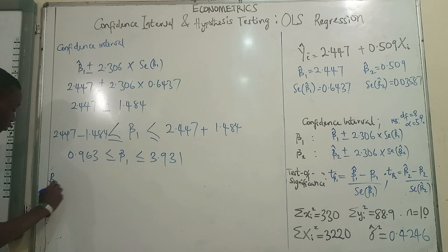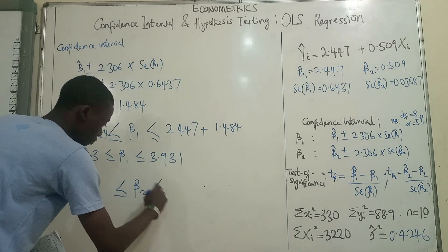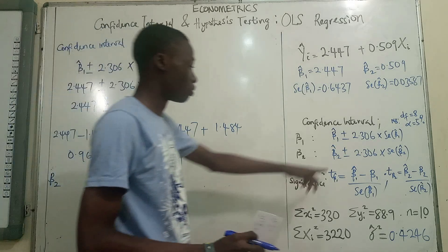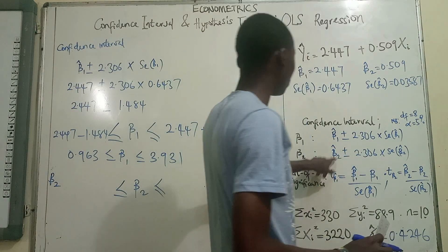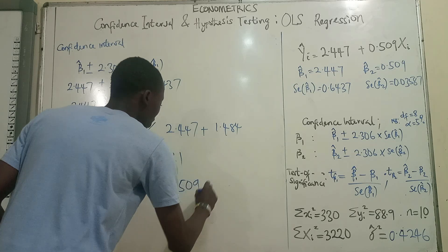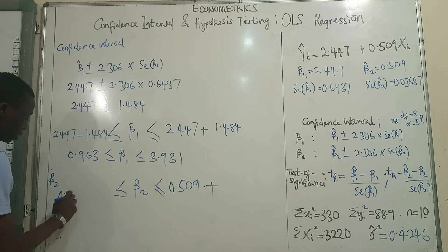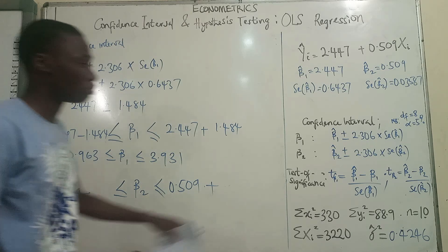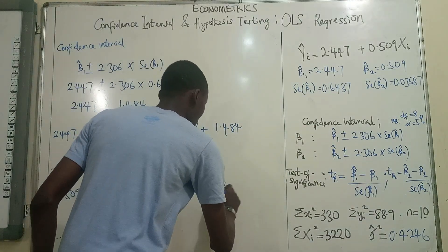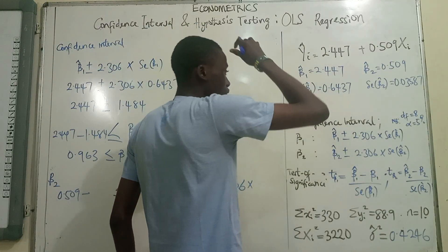Then the same thing for beta 2. The confidence interval for beta 2, that would be the estimated beta 2, which is 0.509 plus that, and on the other hand, this minus 2.306 times standard error. So we have 2.306 times the standard error beta 2 which is 0.03587.